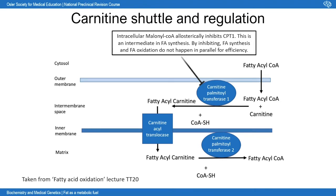The carnitine shuttle is composed of three transporters. The inner membrane of the mitochondria is impermeable to fatty acyl-CoA, so once fatty acyl-CoA enters the intermembranous space, it needs to combine with carnitine — a molecule produced by the body — to be transported through the inner membrane. The fatty acyl-CoA loses its CoA factor, and carnitine binds the fatty acyl molecule; this is mediated by CPT1 (carnitine palmitoyltransferase 1), which is a key regulatory hub and can be inhibited by malonyl-CoA.